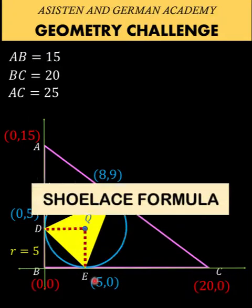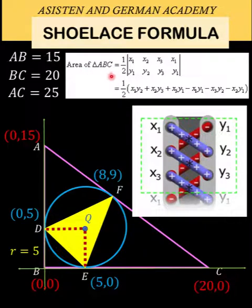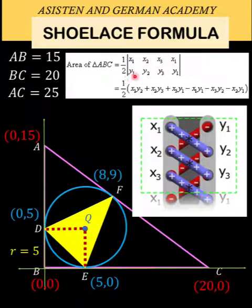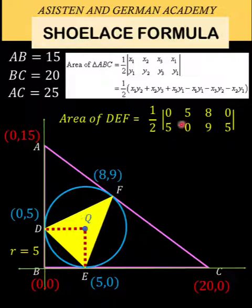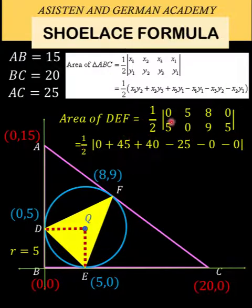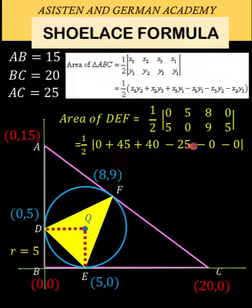We now have all three vertices. Applying the shoelace formula: the area equals one-half times the absolute value of a determinant where the product of the downward diagonals is positive and we subtract the product of the upward diagonals. For triangle DEF with vertices D=(0,5), E=(5,0), F=(8,9): downward diagonal products are 0×0=0, 5×9=45, 8×5=40; upward diagonal products are 5×5=25, 0×8=0, 9×0=0.